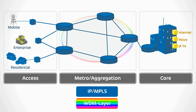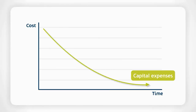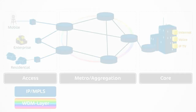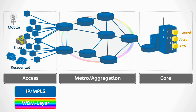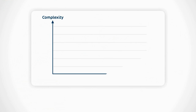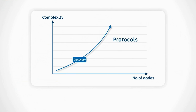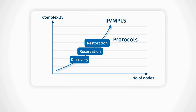Together with the reduction of network layers, the IP MPLS network is extended from core to access layer for new applications. Removing network layers has reduced capital expenses, but expanding the IP MPLS network from core to access has increased operating expenses. This is because of the increased complexity when an IP MPLS network scales from tens of nodes to thousands or more nodes — complexity that comes from the different dynamic protocols for discovery, reservation, and restoration.